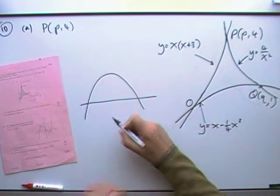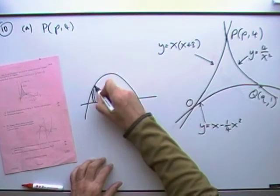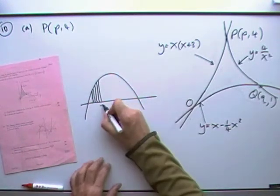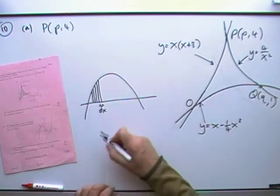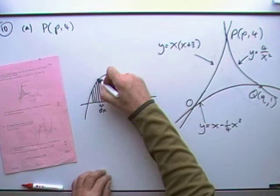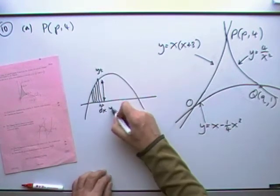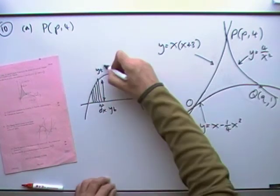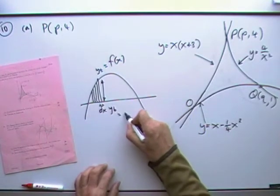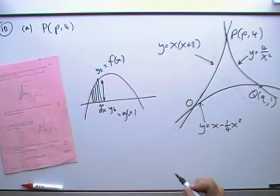When you work out an area, what you're really doing is adding up the areas of thin little strips. The width of each strip is that dx, the thickness of it, and the height is given by the y-coordinate of the top and the y-coordinate of the bottom. The y-coordinate at the top will come from the top function and the y-coordinate at the bottom will come from the bottom function.